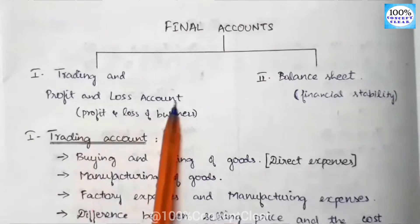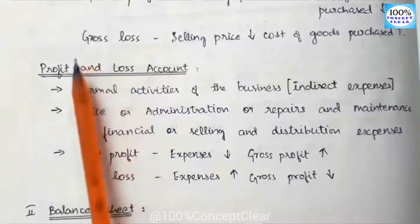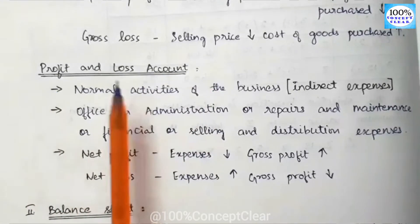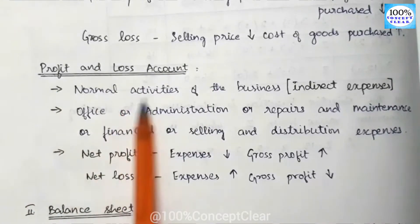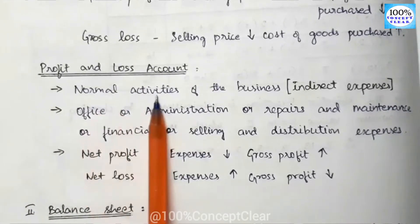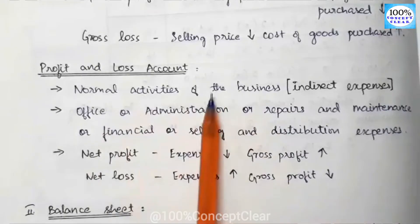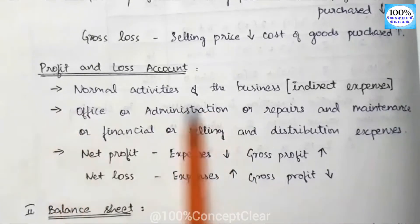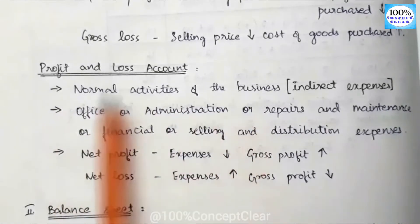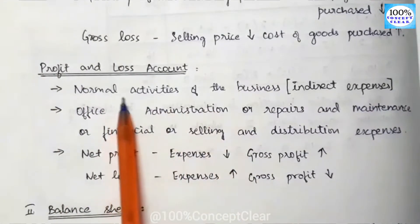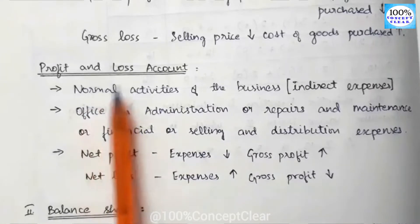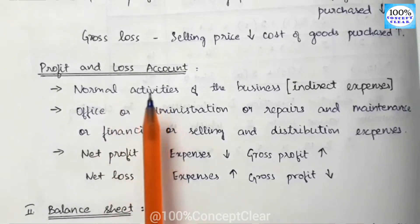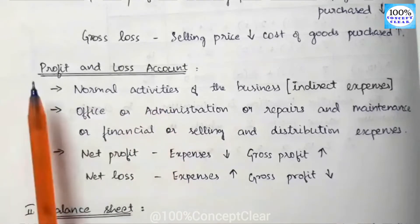We are now looking at the Profit and Loss Account. What are the normal activities of the business? There are normal activities of a business — all of them are recorded in the Profit and Loss Account. In the trading account, we cover buying, manufacturing, and selling of goods.